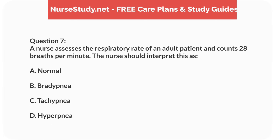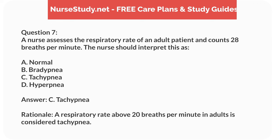Question 7. A nurse assesses the respiratory rate of an adult patient and counts 28 breaths per minute. The nurse should interpret this as: A. Normal. B. Bradypnea. C. Tachypnea. D. Hyperpnea. Answer: C. Tachypnea. Rationale: A respiratory rate above 20 breaths per minute in adults is considered tachypnea.